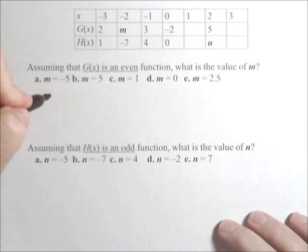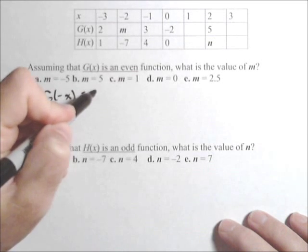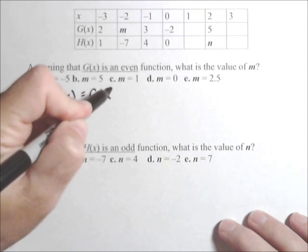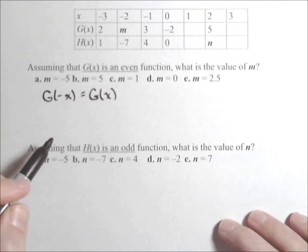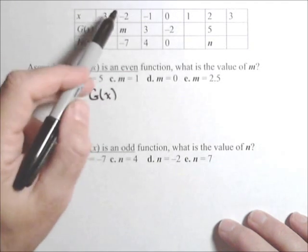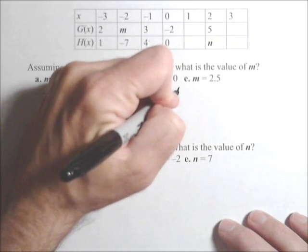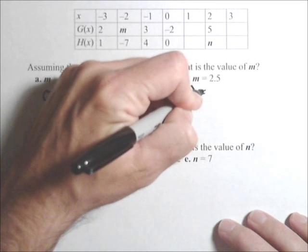We're assuming that g of x is an even function, and we want to find the value of m. Well, first off, if g of x is an even function, that means g of negative x equals g of x.